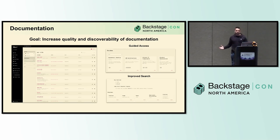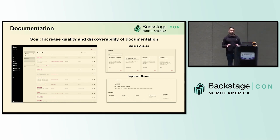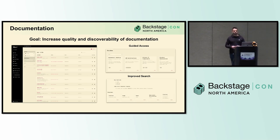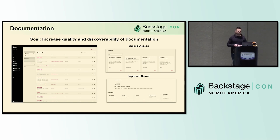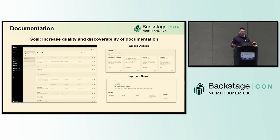Like many teams, as we grew, documentation became a really serious problem. Feedback from our surveys told us not only did we have a problem with lack of documentation, but the documentation we did have was spread across multiple sources, usually outdated or wrong because there was no clear ownership. Since documentation and search were core offerings of Backstage originally, it made sense to start there to increase the quality and discoverability of our docs. We wanted to get it centralized, searchable, and tied directly to owning teams.